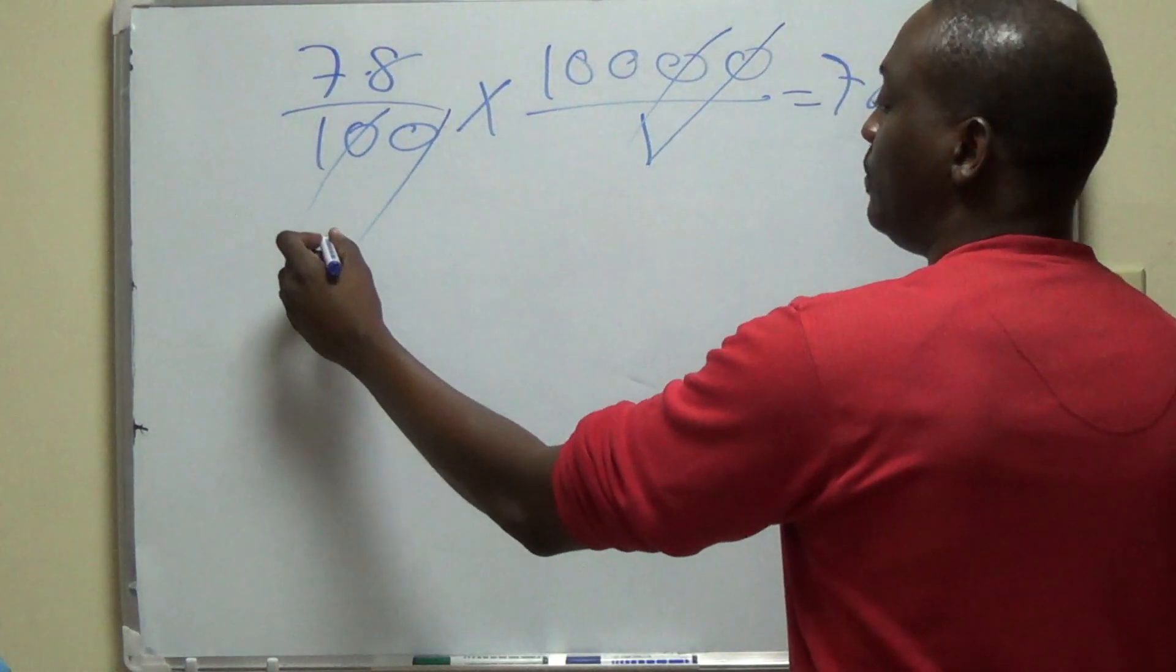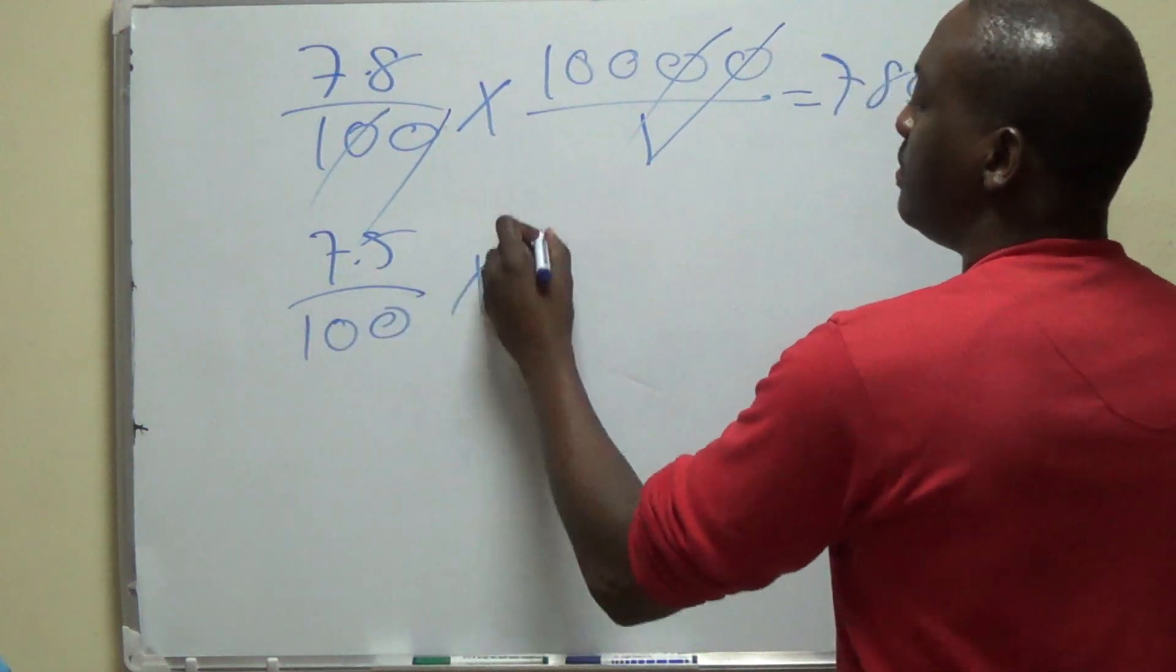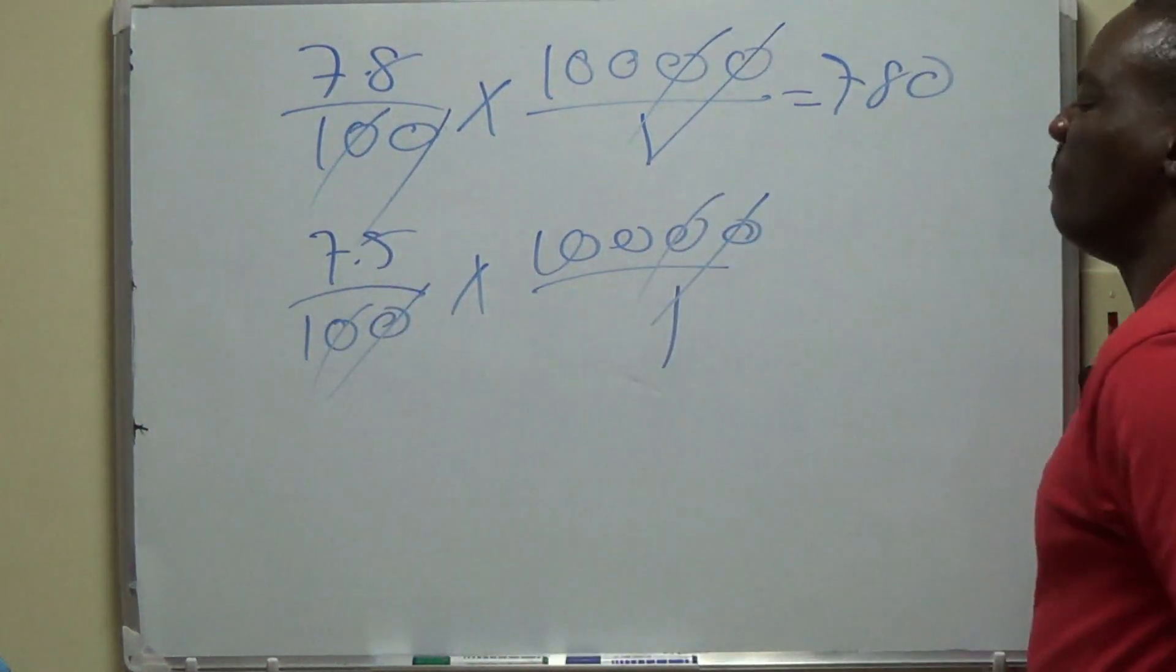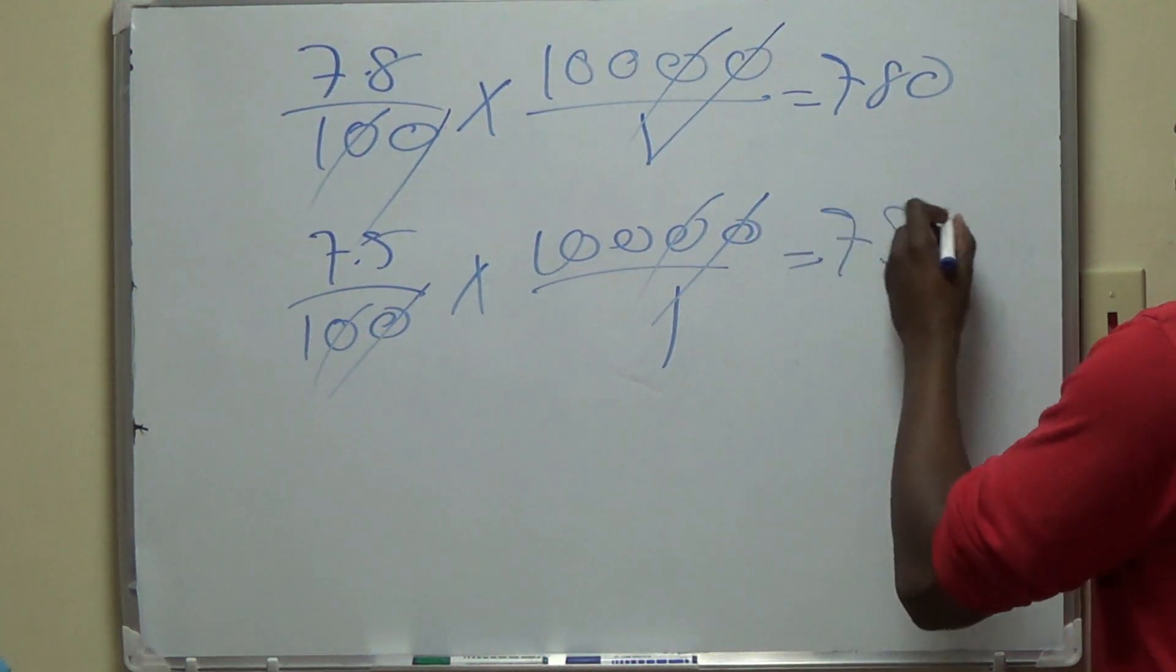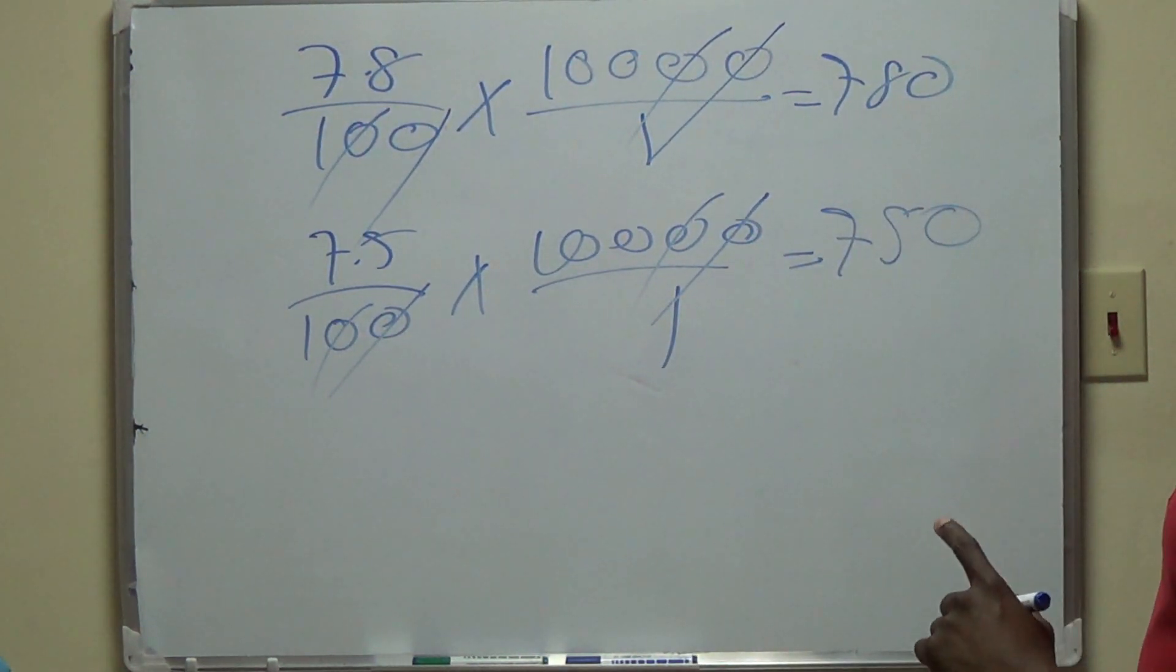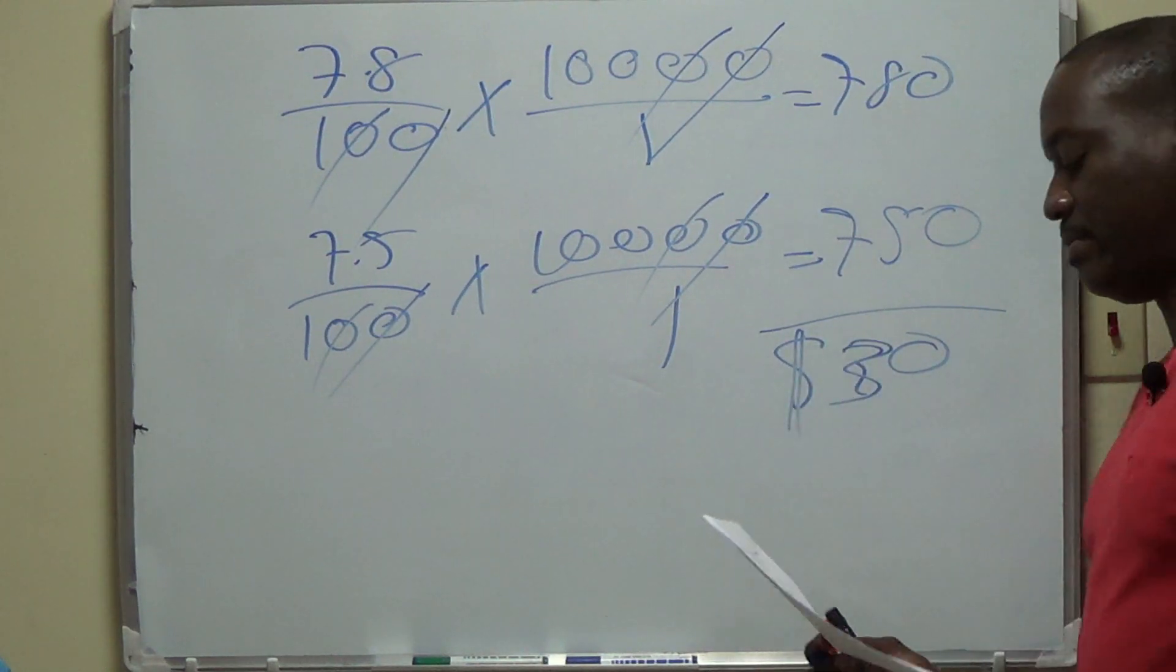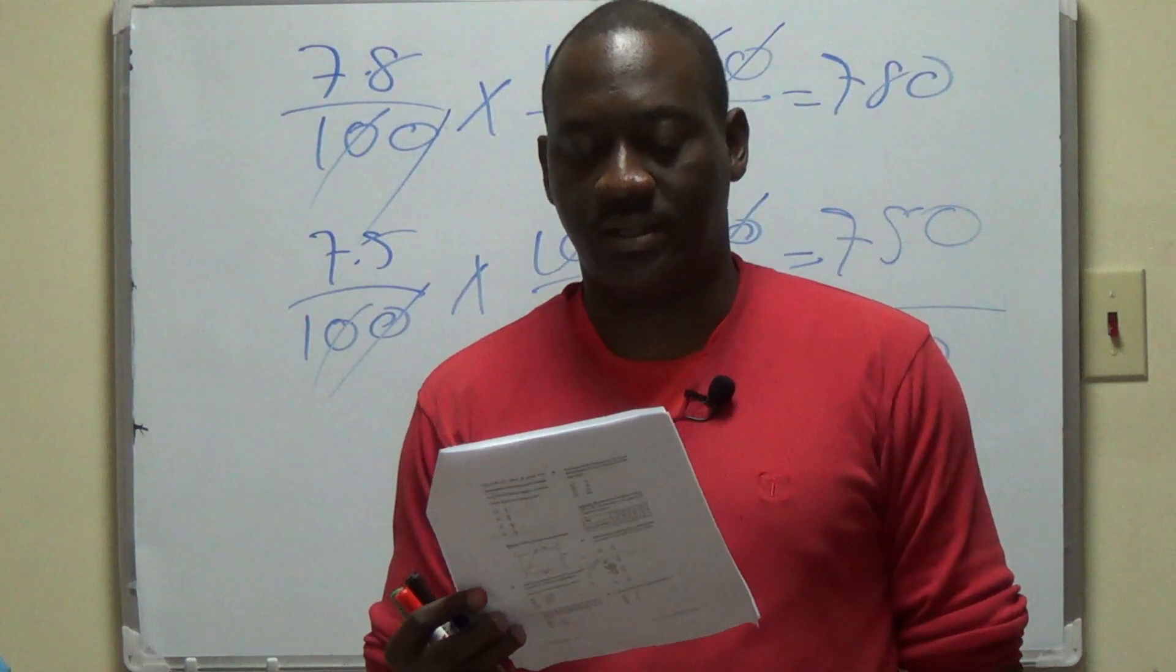And then you do the same thing for 2009. So for 2009, you have 7.5 over 100 multiplied by 10,000 over 1. 7.5 by 100 will give you 750. So the difference between these two would just be 780 minus 750, which would be $30, which should be answer C for this particular question.